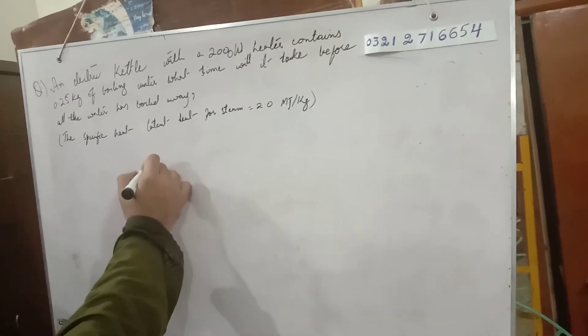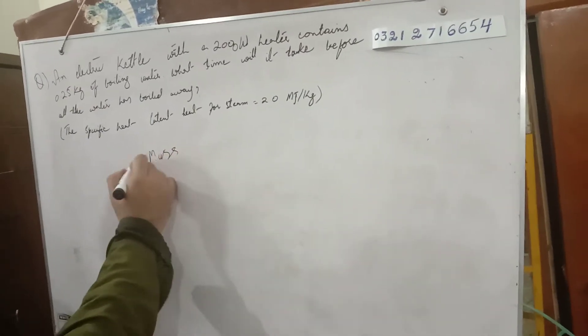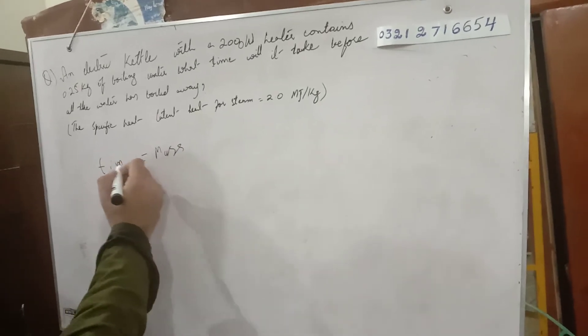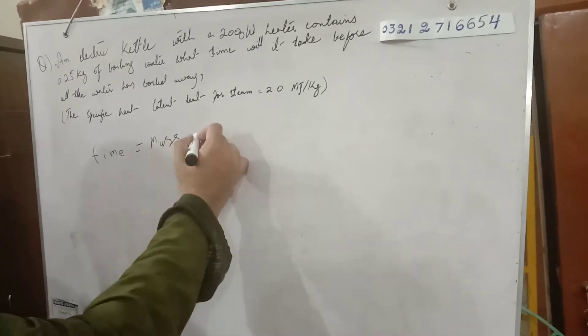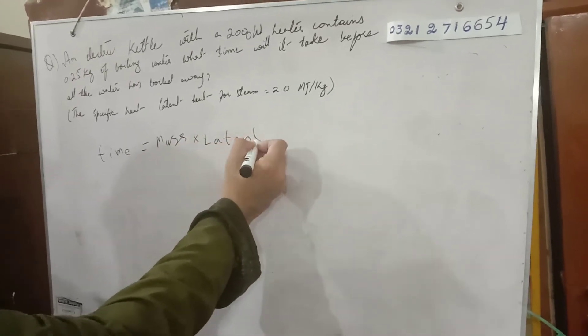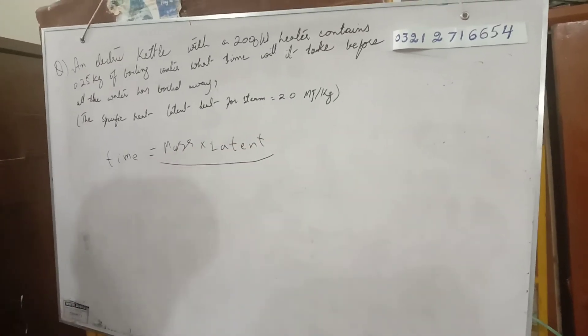This is a very simple calculation. The formula for time is: take mass, multiply by latent heat, then divide by power. This is a clear formula.